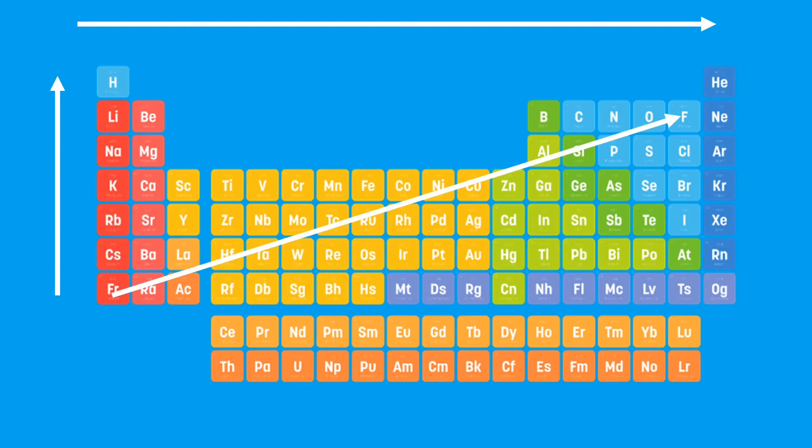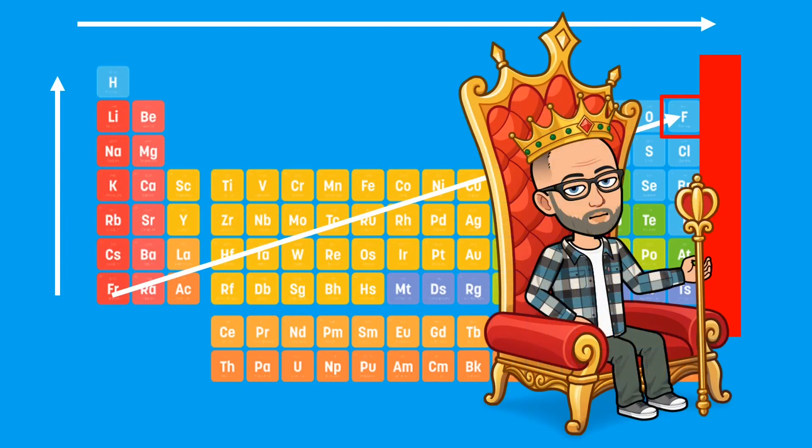Now we don't need to be able to explain this just yet, but we will in Learning Aim A2. We do not talk about Group 8 or Group 0, the noble gases, when we talk about electronegativity because they won't form covalent bonds. That makes fluorine the king of electronegativity - fluorine is the most electronegative element in the periodic table.